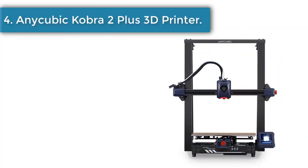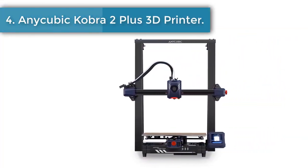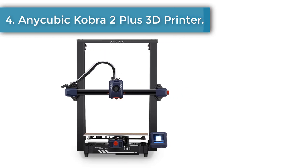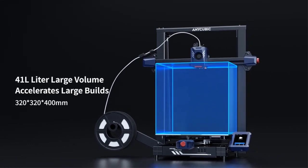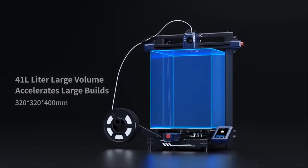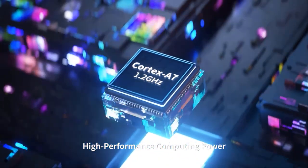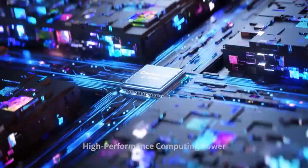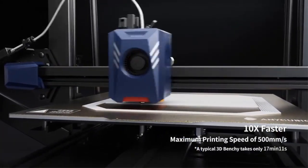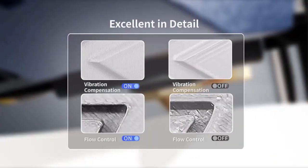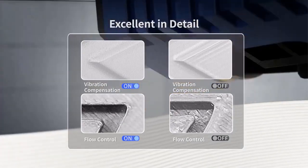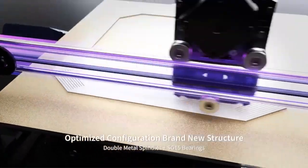Number 4. AnyCubic Cobra 2 Plus 3D Printer. AnyCubic Cobra 2 Plus 3D printer is designed for efficiency, boasting a max speed of 500 mm per second and 10,000 mm/s-squared acceleration. Recommended print speed is 300 mm per second, which is 10 times faster than a regular FDM 3D printer. Perfect for professionals and beginners.